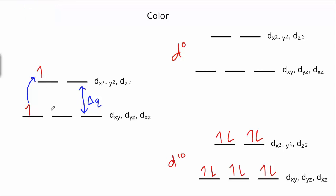When the electron falls back down, it emits a photon. The key idea is that it absorbs certain photons that correspond to colored light. Typically, the bigger the crystal field splitting energy, the higher the energy of light absorbed — so the bluer or more violet the color that gets absorbed.